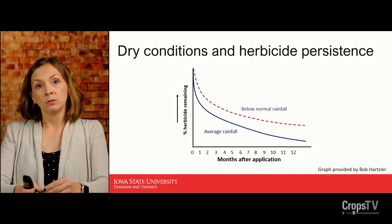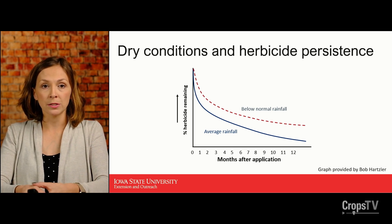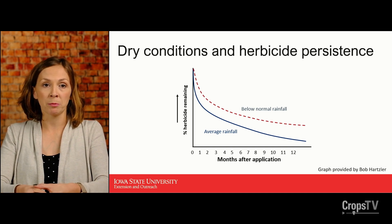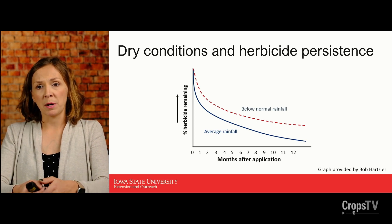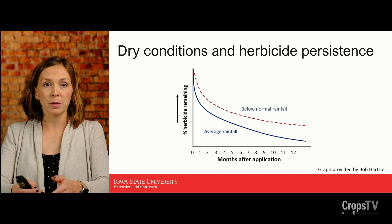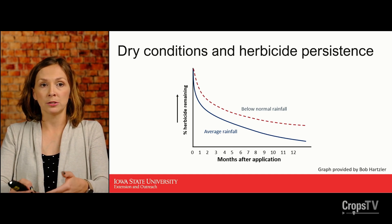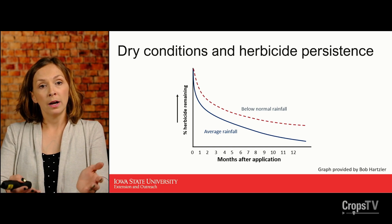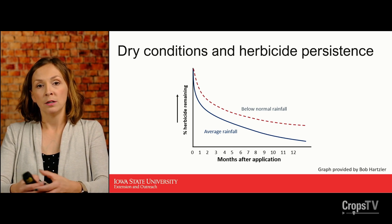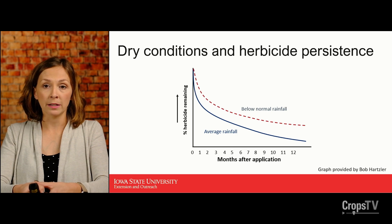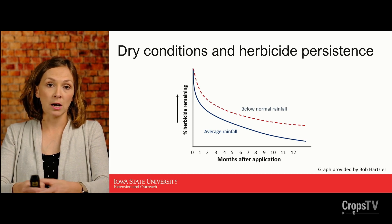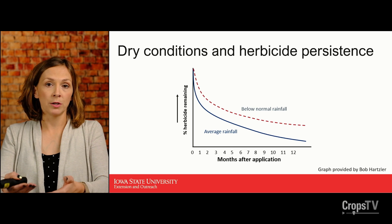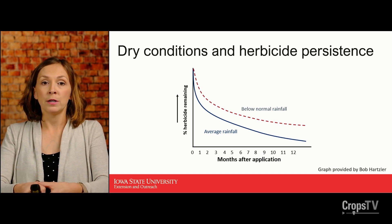We do want soil-applied herbicides to persist for some time after application because we need that residual activity to control some of our most challenging weed issues. As this graphic by Bob Hartzler shows, at the time of application you start with essentially 100% of that herbicide. In an average rainfall environment, breakdown happens and perhaps a year later there would be very little chemistry left. However, in a dry environment those breakdown processes slow and we're going to have increased herbicide persistence.